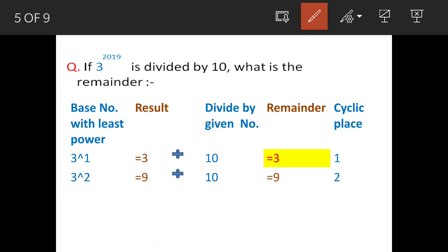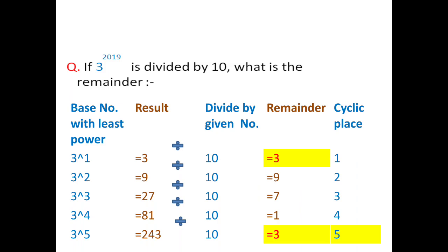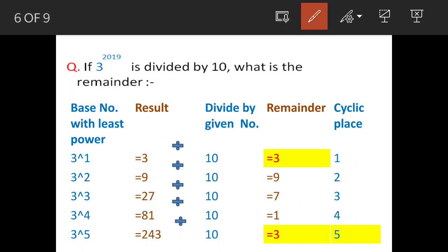The next one is 3 squared equals 9 divided by 10. Again, not going into decimals - remainder is 9, and this is the second cyclic place. Now we will see the further places because we have not got the number repeated.